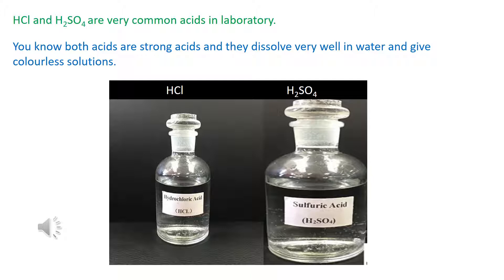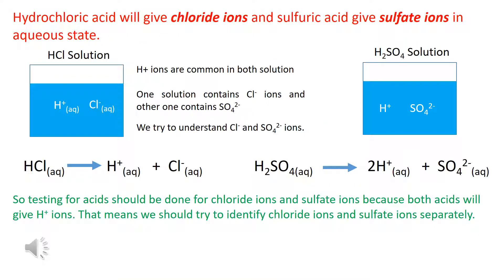HCl and sulfuric acids are very common acids in the laboratory. Both acids are strong acids and they dissolve very well in water and give colorless solutions. Hydrochloric acid will give chloride ions and sulfuric acid gives sulfate ions in aqueous state.